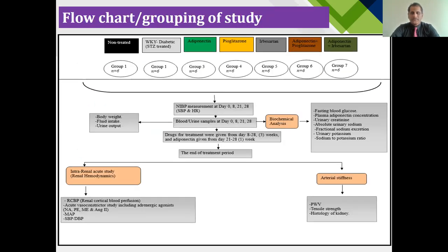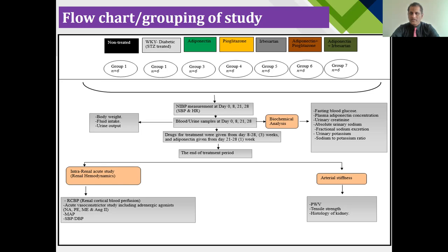This was the flowchart for the grouping of the study. We made seven groups: the first Wistar WKY group was non-diabetic, serving as the negative control. The positive control was the diabetic streptozotocin group in which we produced the model by administering streptozotocin. The third group was exogenously administered adiponectin. Pioglitazone was administered at a dose of 30 mg per kg. Irbesartan was administered at 10 mg per kg, and the adiponectin-pioglitazone combination was group 6. The last group was the combination of adiponectin with irbesartan. All groups contained n equals 6 animals.